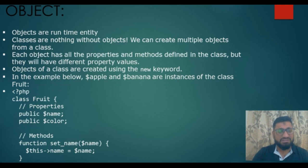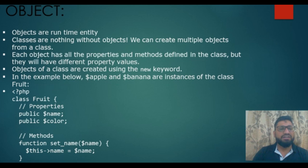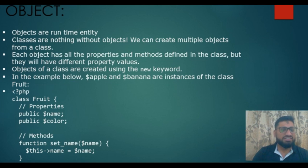It is very much compulsory that whenever you are creating an object, it should be created with the 'new' keyword. In this example, we have taken variables $apple and $banana, which are instances of the class 'fruit'.